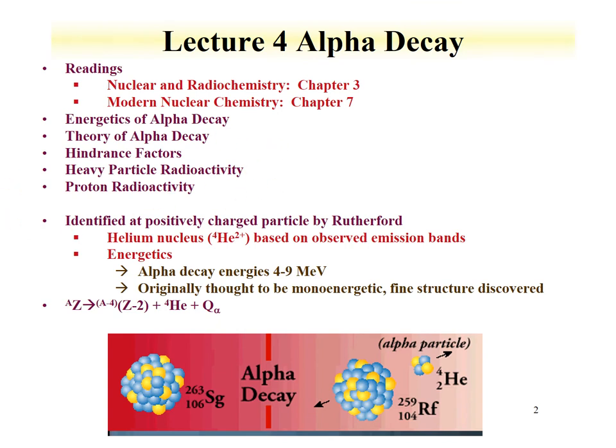There's a range on the chart of the nuclides called the proton drip line, and we'll discuss the emission of protons from isotopes.